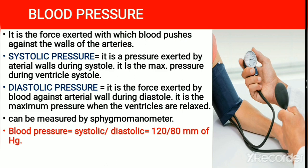Blood pressure is measured using an instrument called a sphygmomanometer. Doctors wrap a cuff around the arm and measure pressure. The sphygmomanometer has a column filled with mercury, which rises as pressure is applied — similar to a thermometer. During systole the mercury rises more; during diastole it falls slightly. For a normal adult, systolic pressure should be 120 mm Hg and diastolic pressure should be 80 mm Hg. The unit mm Hg indicates how many millimeters the mercury column has risen.